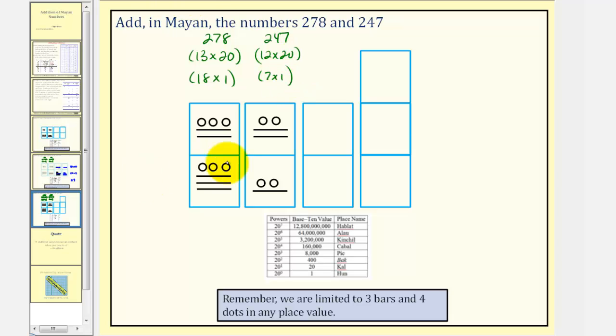Let's find the sum horizontally first. Adding the ones place value, we'd have four bars and five dots. Adding the 20s place value, we'd have four bars and five dots, and then we'd have two dots as well.